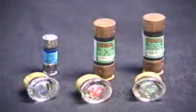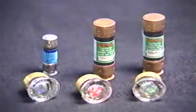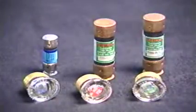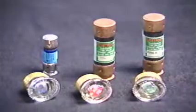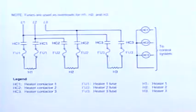Fuses are the simplest of overload devices, constructed of an internal element that will melt if excessive current flows through the circuit it's protecting. Fuses are often used to protect resistive loads which have no coils, such as heaters.